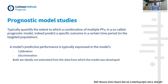In primary prognostic model studies, we are interested in the extent to which a combination of prognostic factors combined in a prognostic model accurately predicts a specific outcome in a specific time period in the targeted population. The two main parameters to quantify the performance of a prognostic model are calibration and discrimination. Both parameters are ideally not estimated from the same data used to develop the model, because that commonly shows overly optimistic predicted performance, but rather estimated from new data not used to develop the model.